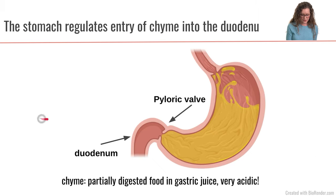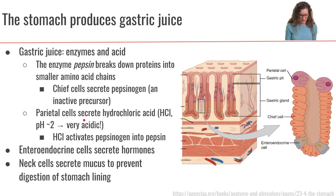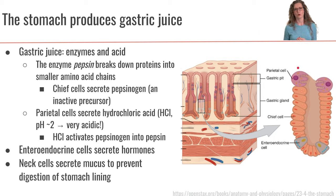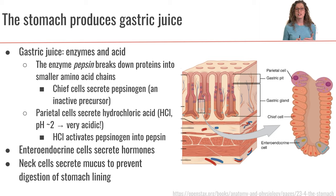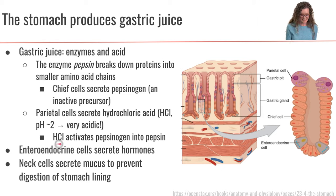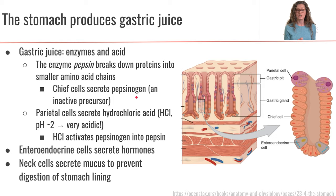Another type of cell is called a parietal cell, pictured here. Parietal cells are responsible for secreting hydrochloric acid, or HCl. This hydrochloric acid has a pH around two, which means it is very very acidic. One of the important functions of this hydrochloric acid is that it is going to activate the pepsinogen that was secreted by the chief cells, converting it into pepsin — an active enzyme.